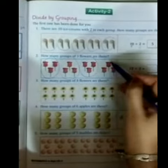1, 2, 3. Next. 1, 2, 3. Next. 1, 2, 3. Each group has 3 flowers.